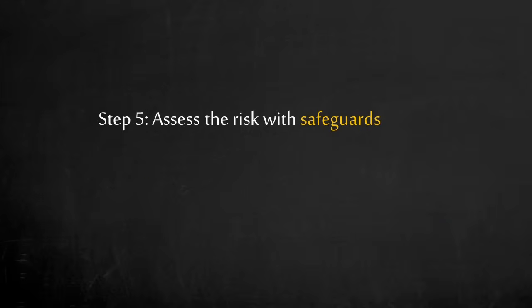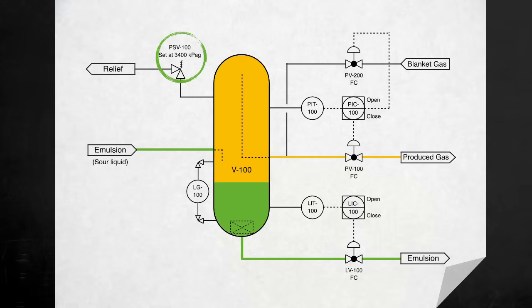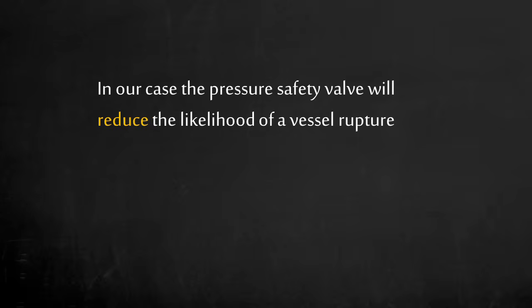Step 5: Now the focus is to reduce the risk by reducing the probability of the consequence. Look for the safeguards and assess the risk with safeguards applied. Is there an alarm with operator intervention? Is there a pressure safety valve on the vessel? Is there an automatic safety shutdown on the high pressure alarm? There is a pressure safety valve PSV-100 designed for this blocked flow case. The pressure safety valve will reduce the likelihood of a vessel rupture, but this will not eliminate the risk since the pressure safety valve can potentially fail.